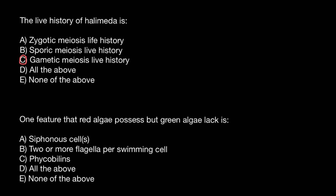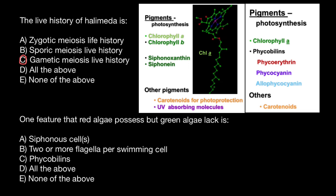Variant C: phycobiliins. Take a look at this picture — on the left are the photosynthetic pigments found in green algae: chlorophyll A, chlorophyll B, and accessory pigments. And here are the photosynthetic pigments found in red algae. Red algae have chlorophyll A, but not chlorophyll B, and they have phycobiliins. This is our answer because we cannot find phycobiliins in green algae, but red algae possess these photosynthetic pigments. So our choice is answer C.